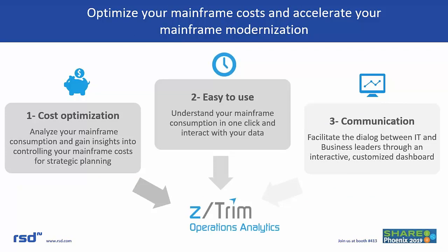We want to talk about optimizing mainframe costs and accelerating modernization. Information alone is not sufficient — it's access to meaningful information that will facilitate the conversation across stakeholder groups and enable optimization and modernization. ZTRIM allows you to analyze mainframe consumption using key performance indicator metrics built into the product, predefined, so that you can gain immediate insight for decision making. It's easy to use — we provide access to consumption information to any stakeholder in one click, and you can interact with the data as you analyze and plan. Easily communicate mainframe consumption data across the organization using meaningful dashboards.